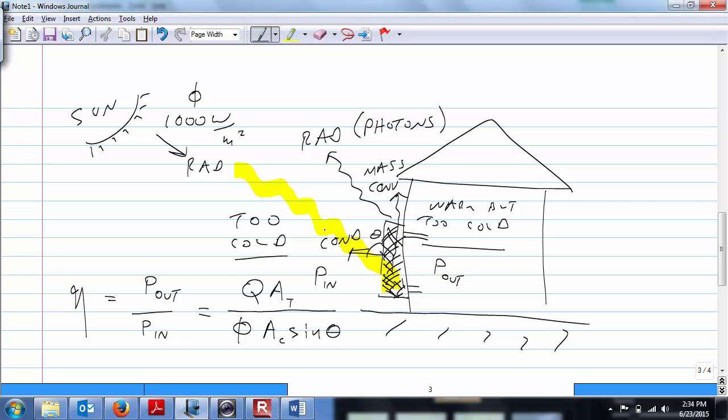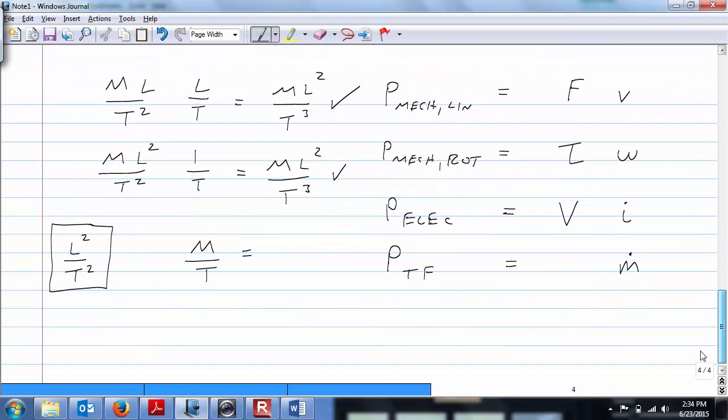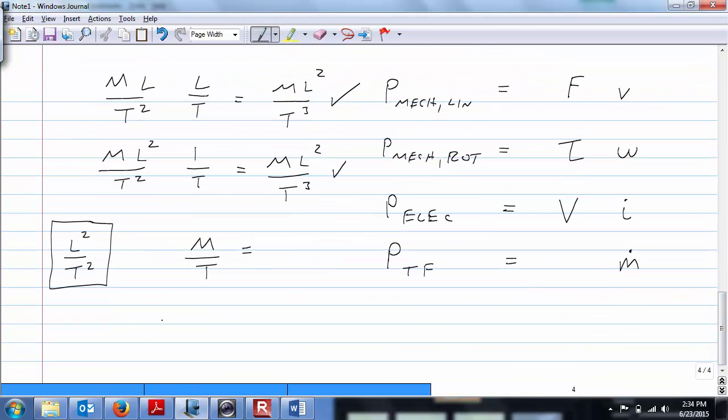So we found our thermal fluid power per unit area, that's Q. We're going to multiply by our cross-sectional area, that's A sub T. That's our P out. And when we divide those two numbers by each other, we're going to get our efficiency. Is that clear? Enough for now? Okay, good. So let's go back to that site.